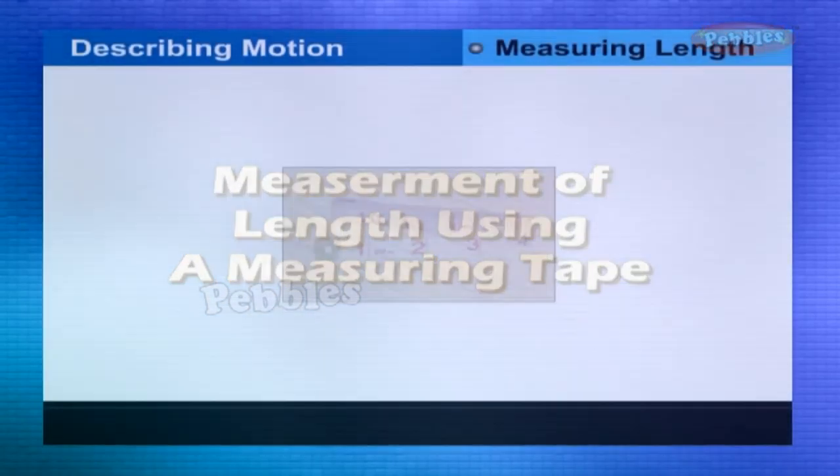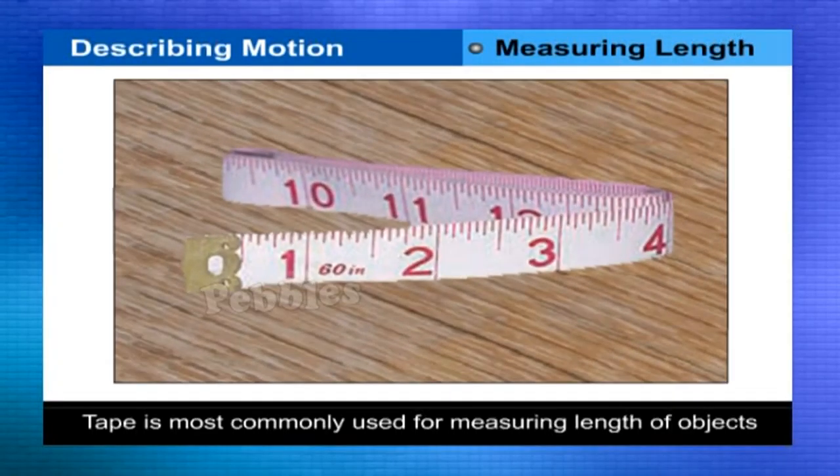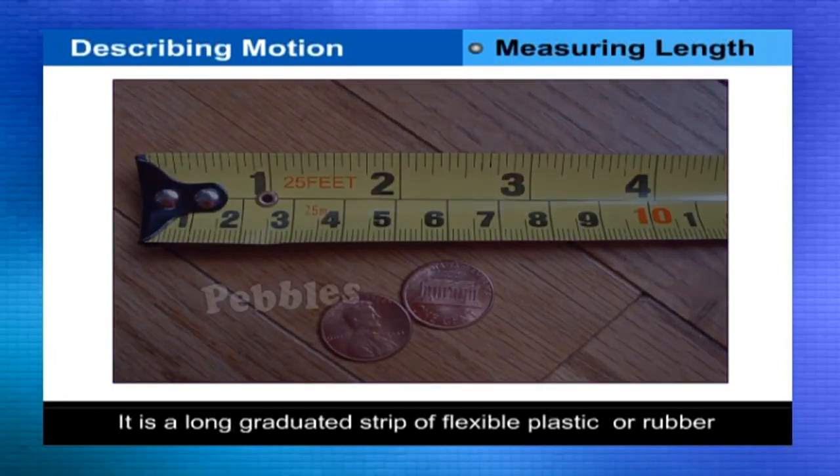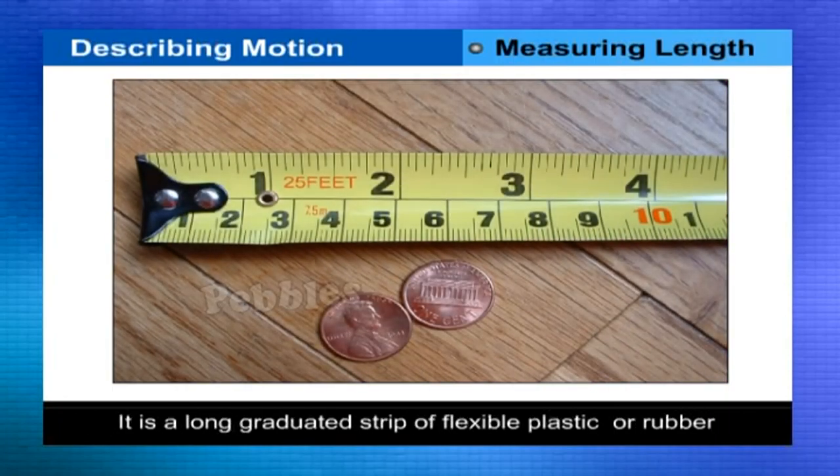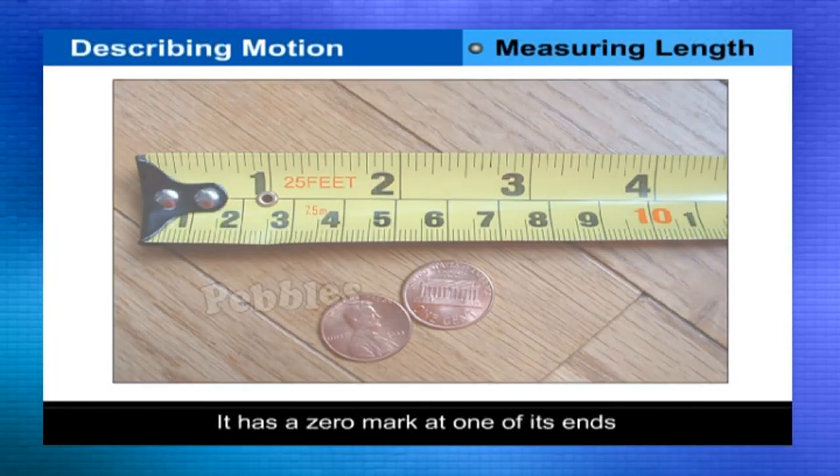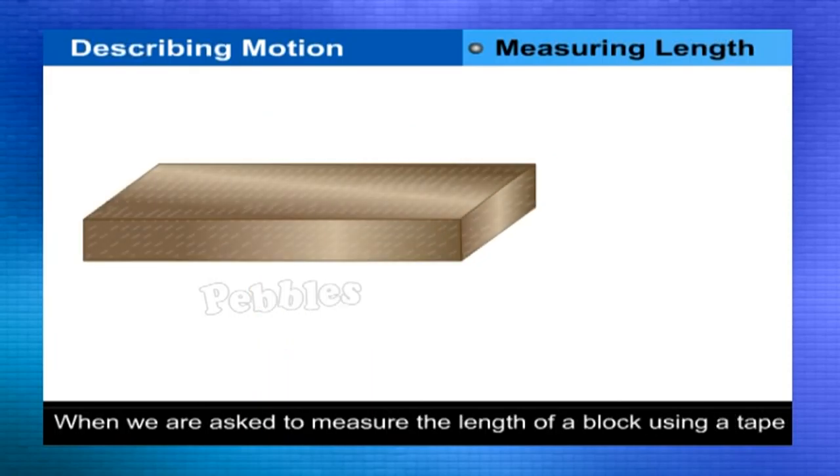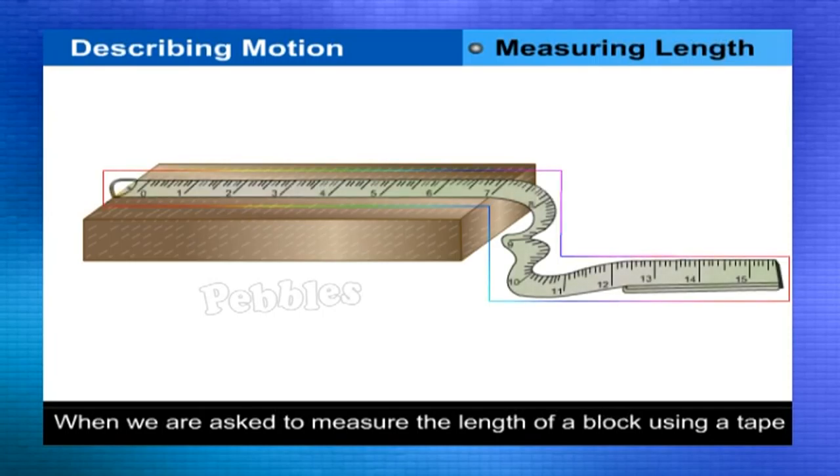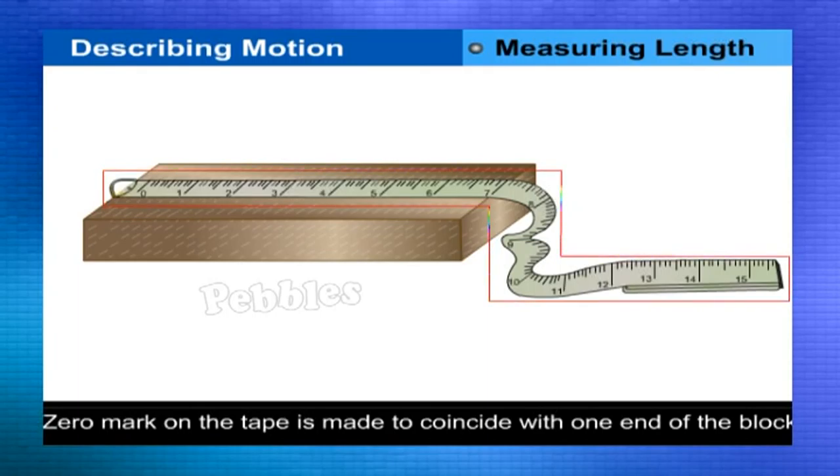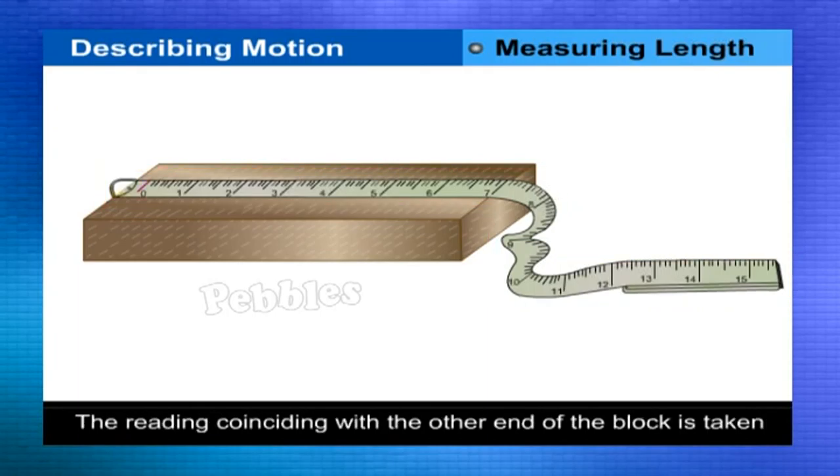Measurement of length using a measuring tape. Measuring tape is most commonly used for measuring length of objects. It is a long graduated strip of flexible plastic or rubber or that of an alloy as in figure. It has a zero mark at one of its ends and divisions are marked in centimeters and inches along its length. When we are asked to measure the length of a block using a measuring tape, then the zero mark on the tape is made to coincide with one end of the block, and the reading coinciding with the other end of the block is taken.